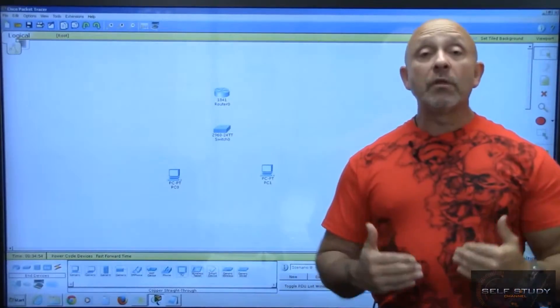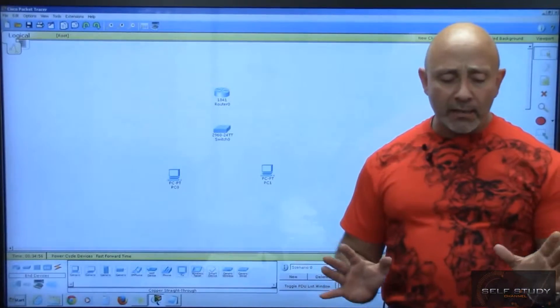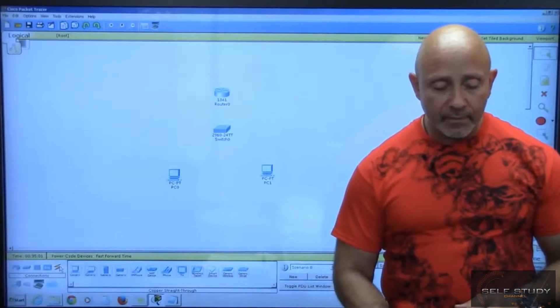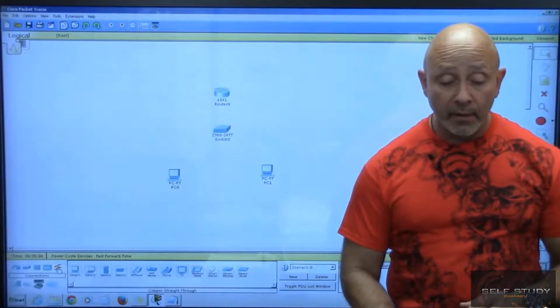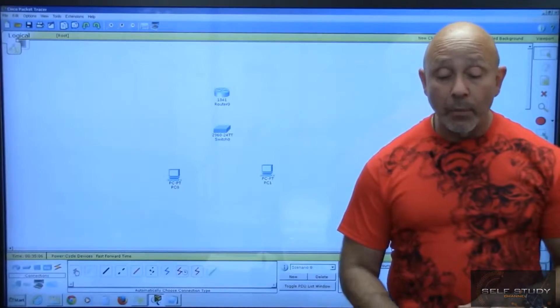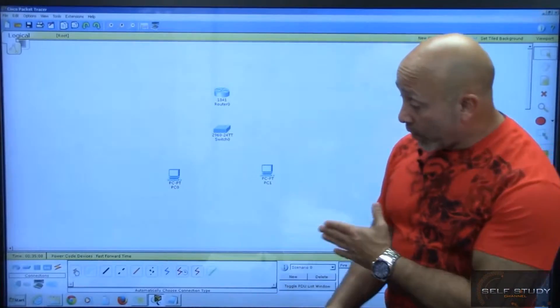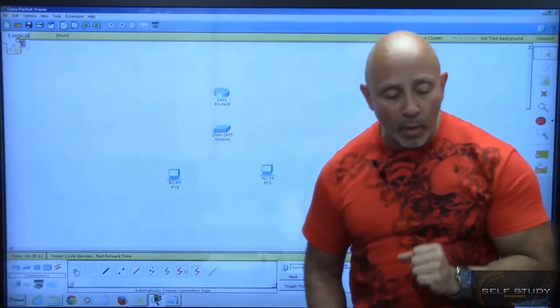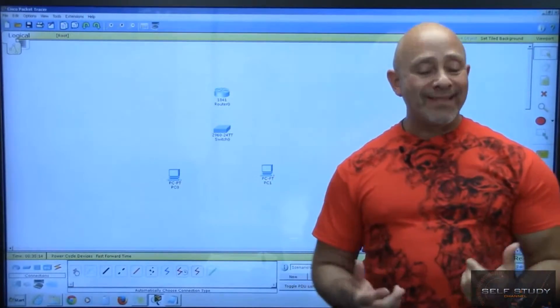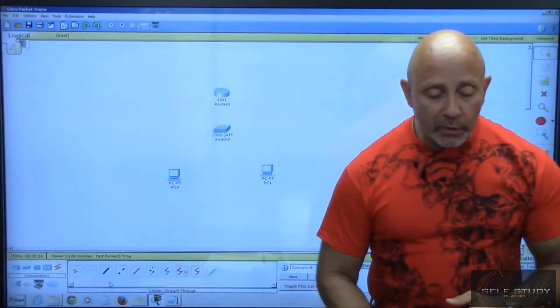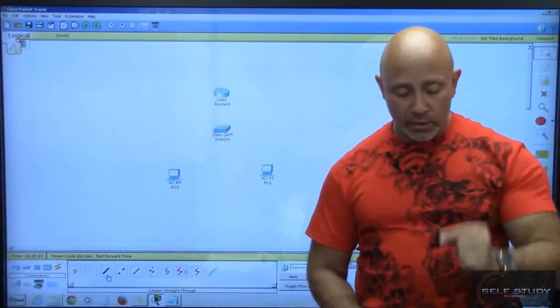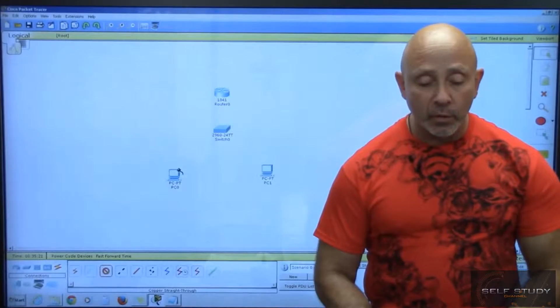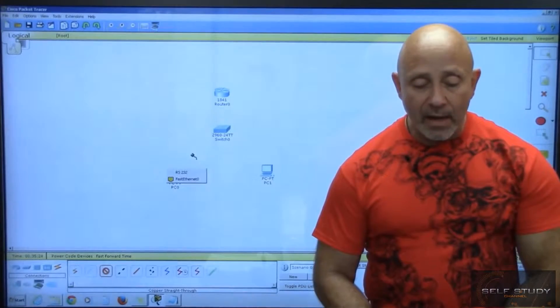We're going to connect them using the proper cabling. Now we could cheat because if we were to pick the lightning bolt right under the category and then pick the lightning bolt again where the cables are, it'll actually choose a connection for us. But we don't want that. We want to choose the right type of cabling. So between a PC and a switch, we're going to choose a copper straight-through cable.